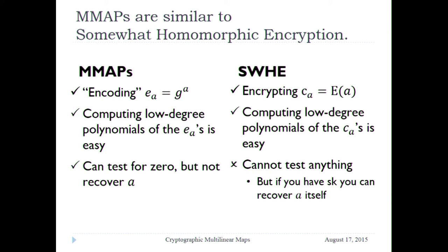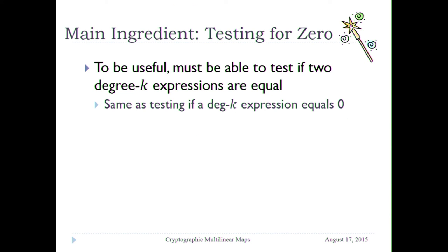But the really big difference is that in homomorphic encryption you can compute whatever you want — if it's fully homomorphic, then really whatever you want. When you're done computing, what you have is a ciphertext and you can't make sense of it unless you know the secret key. But if you know the secret key, you can also read the inputs and all intermediate values. With multilinear maps, we want something else: once you've done the computation, you want to test if the result is zero — but you do not want to be able to compute intermediate values or figure out what the inputs were.